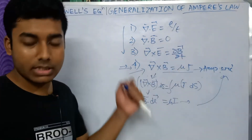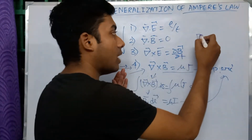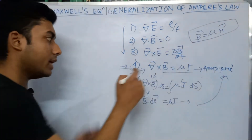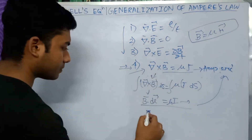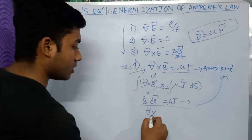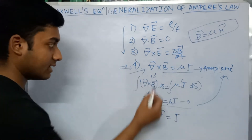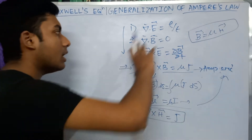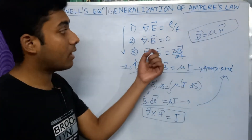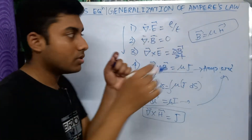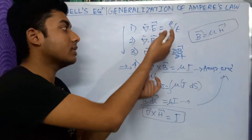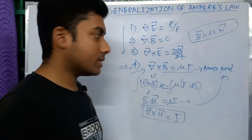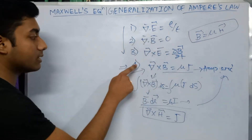We can rewrite all equations in terms of H vector. Since B equals mu H, the equation del cross B equals mu J becomes del cross H equals J, with mu cancelling from both sides. In free space, the charge density equals zero, so del dot E equals zero. Del dot B always equals zero, and all equations are modified under given conditions. These are the basics — Maxwell's equations as written, but the fourth equation needs correction.